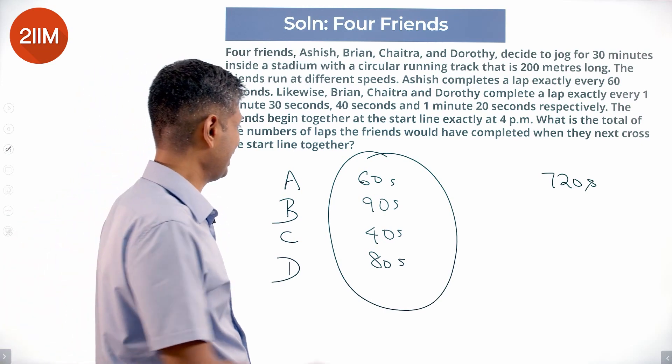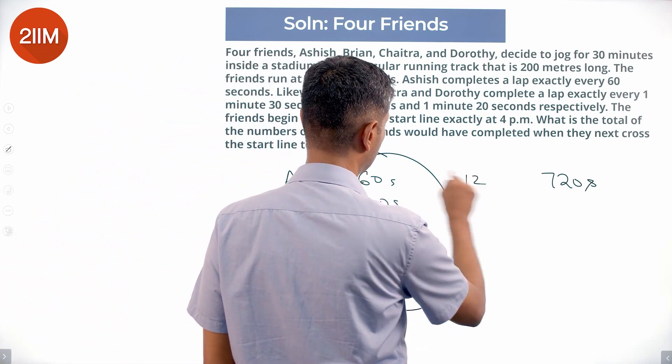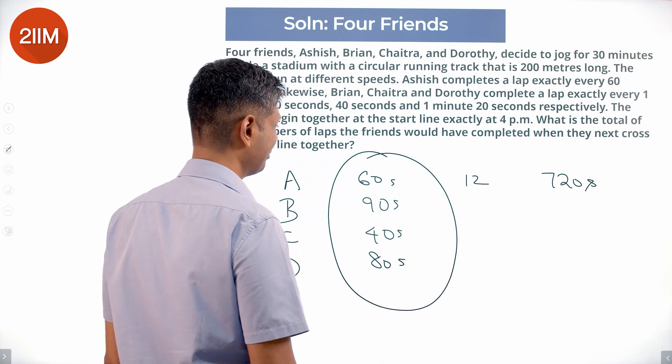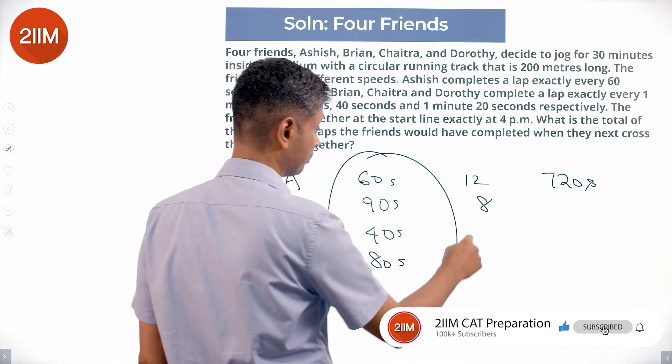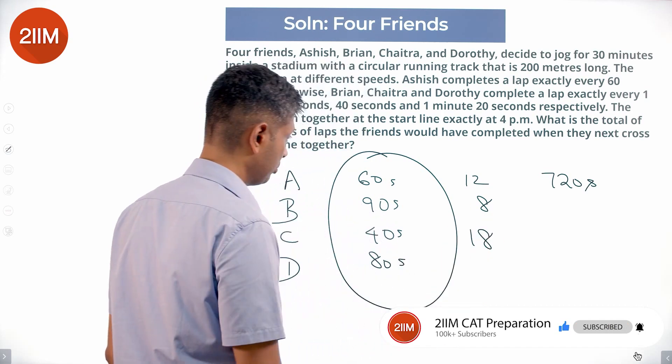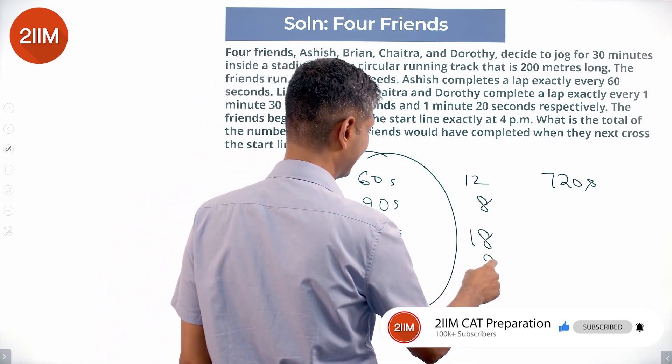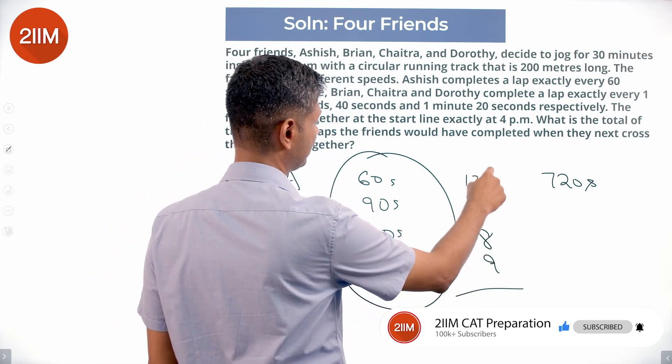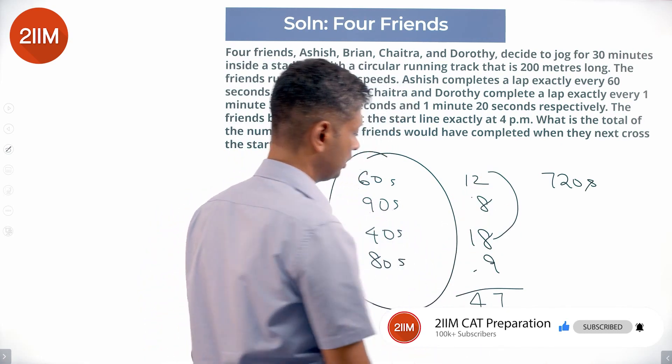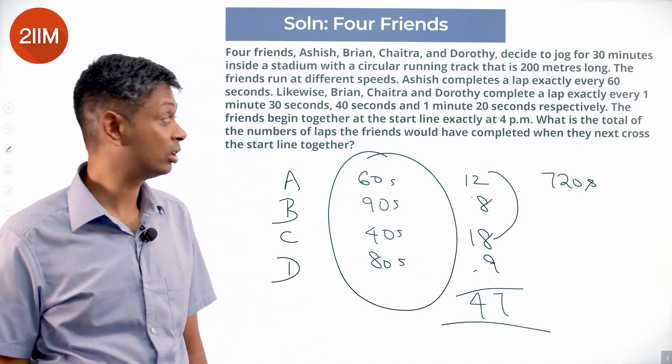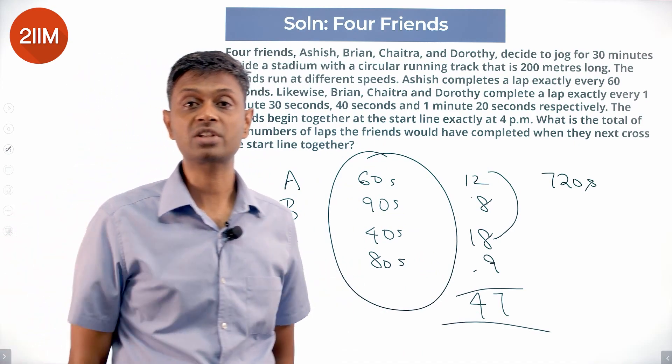So what is the total number of laps that they have done? A would have done 720 by 60, 12 laps. B would have done 720 by 90, 8 laps. C would have done 720 by 40, 18 laps. D would have done 720 by 80, 9 laps. And all this, 12 plus 18 is 30, 30 plus 17 is 47. Total of 47 laps before they all meet the starting point together.